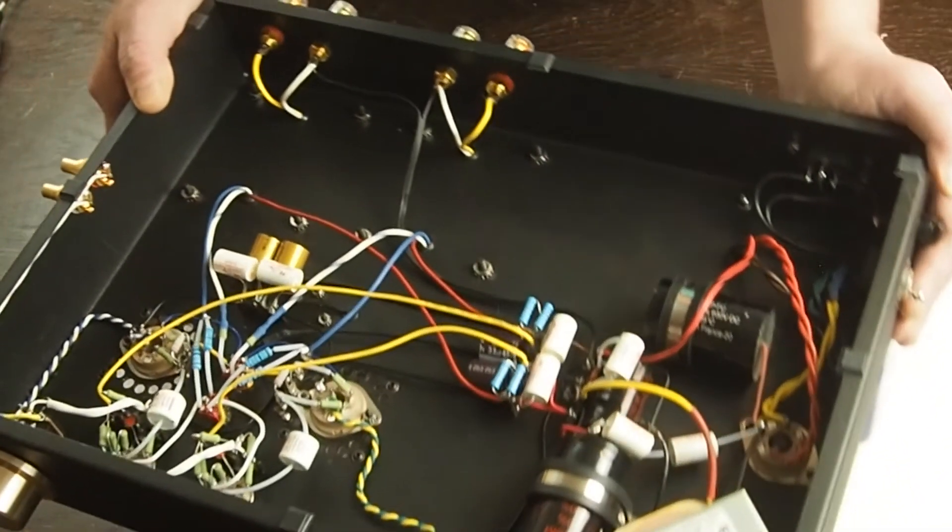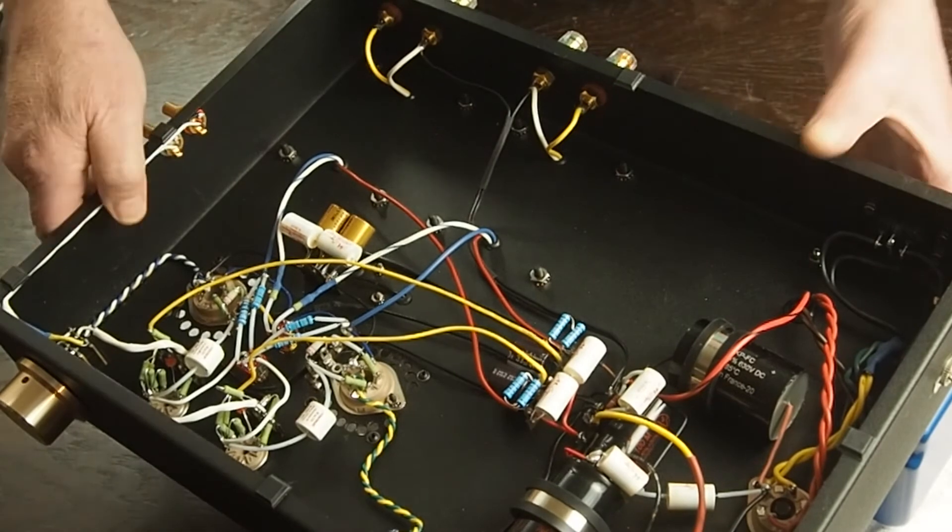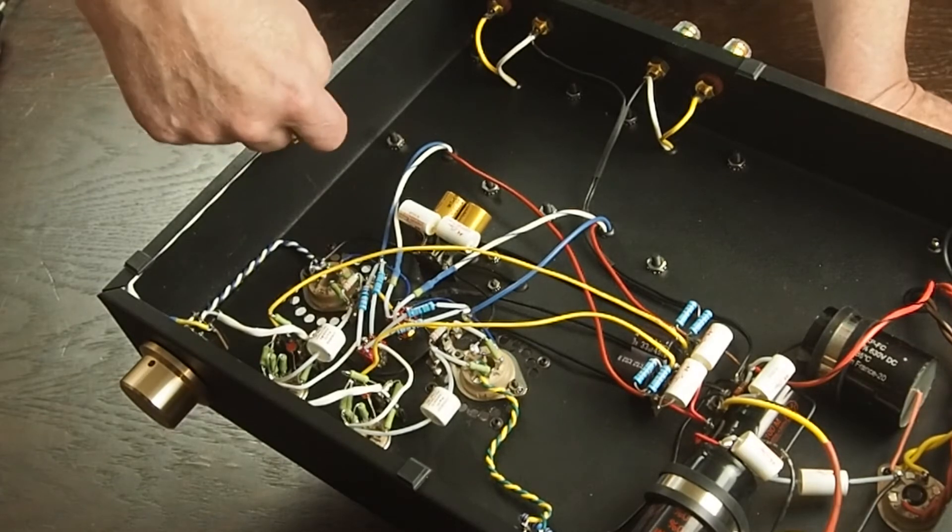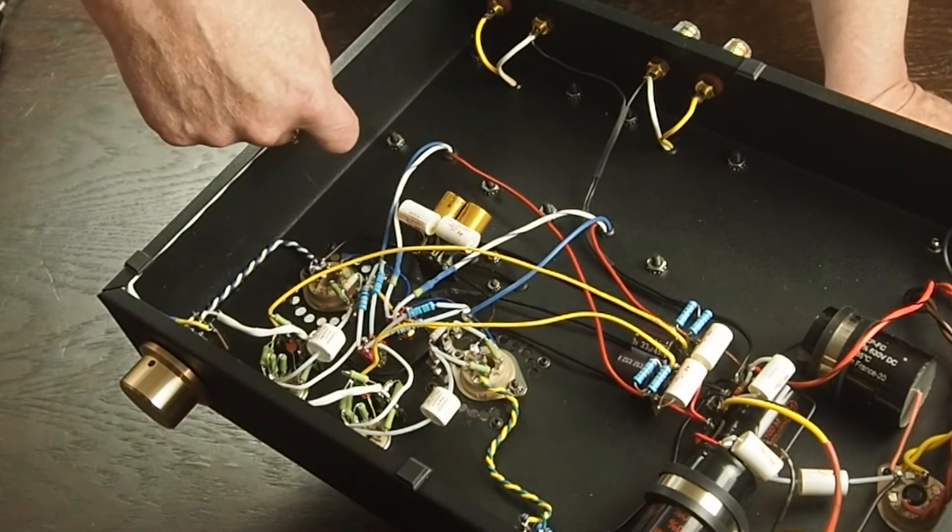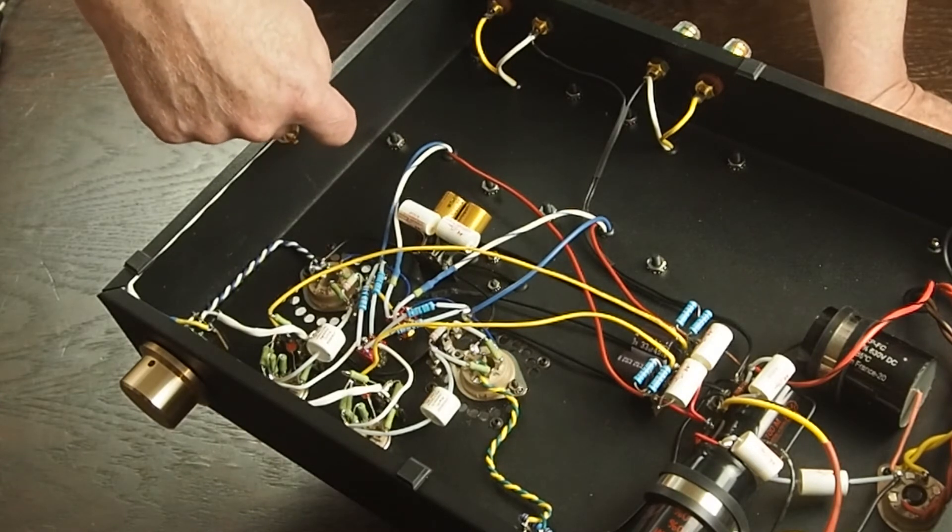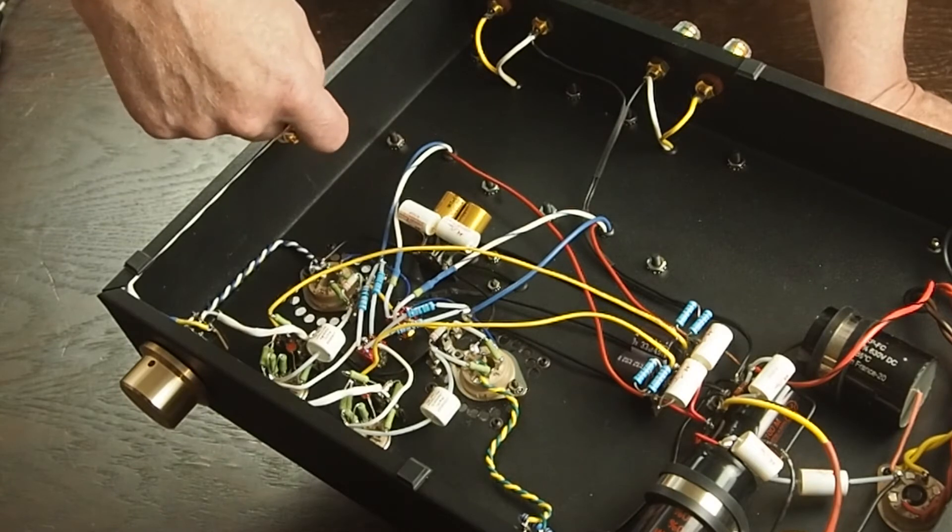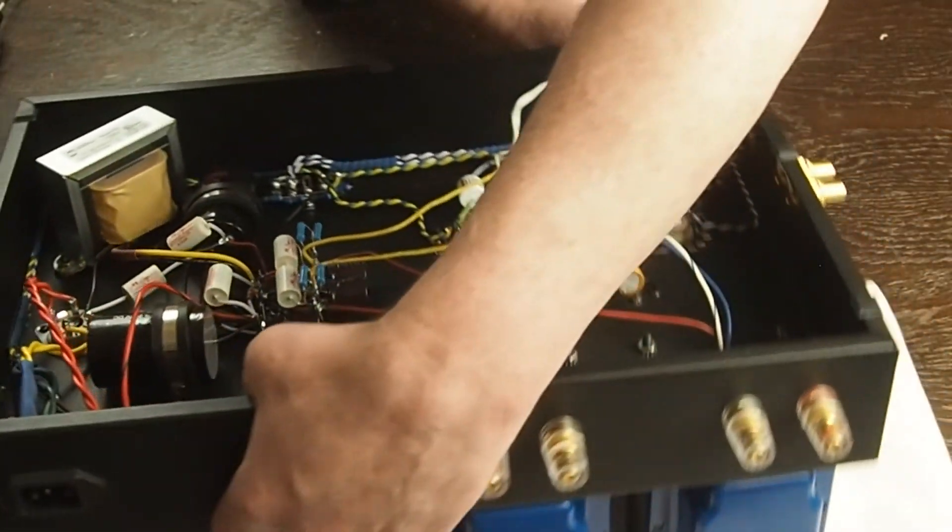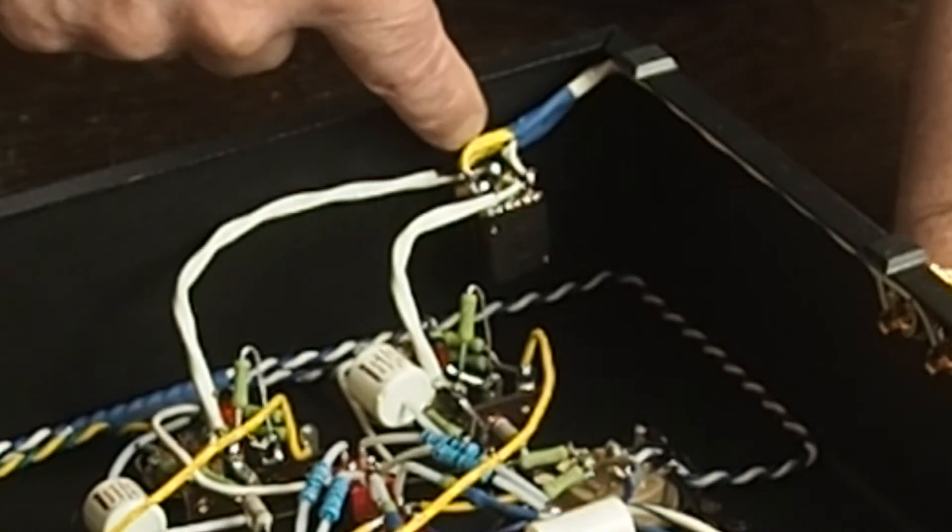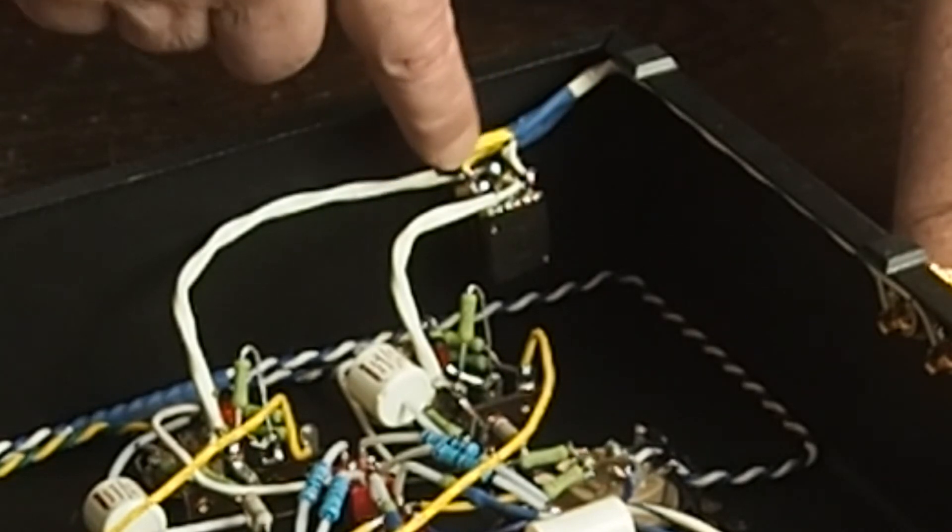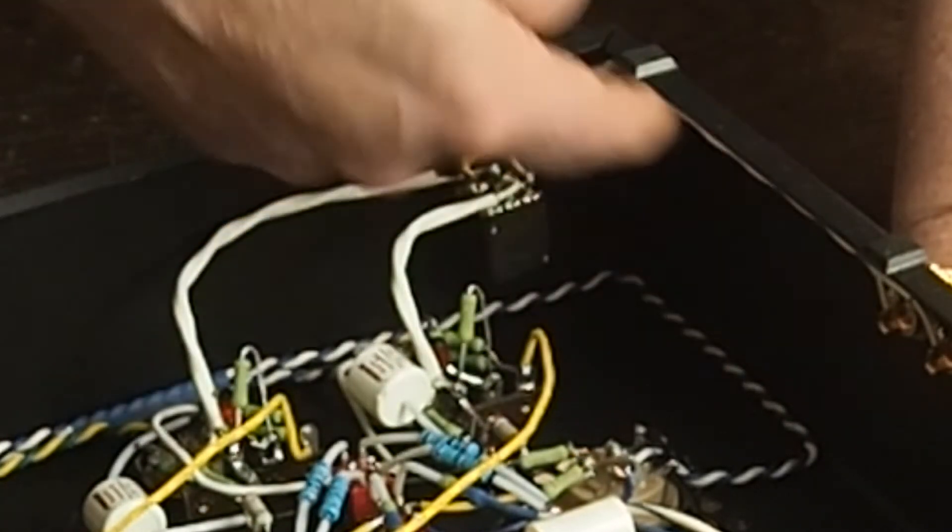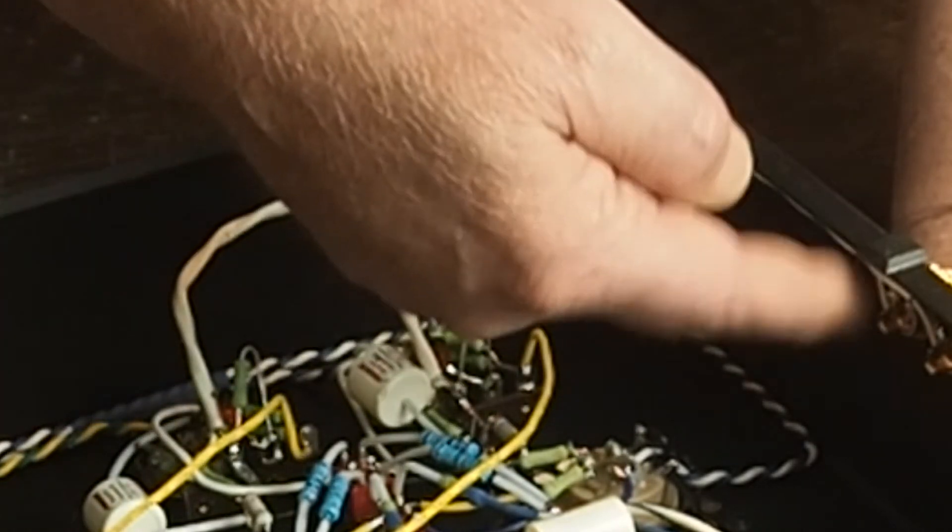The input jacks are insulated from the chassis, and it's a two-wire twisted with a shield, and each wire of the twisted pair goes to a ground and a signal. It comes over here to the volume control. The shield is grounded at this end with a negative. For this run, the shield's grounded on this end, not on this end.